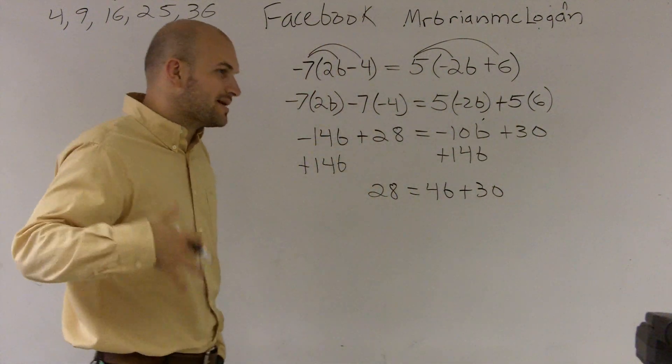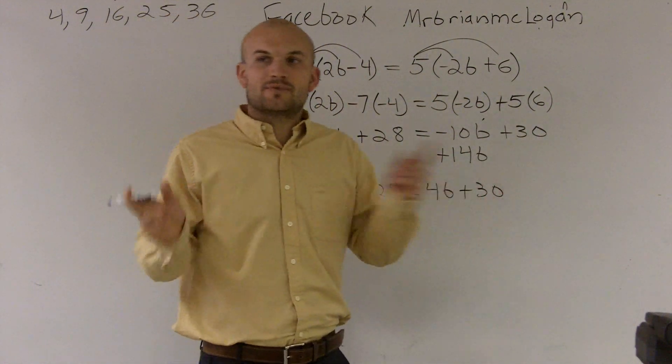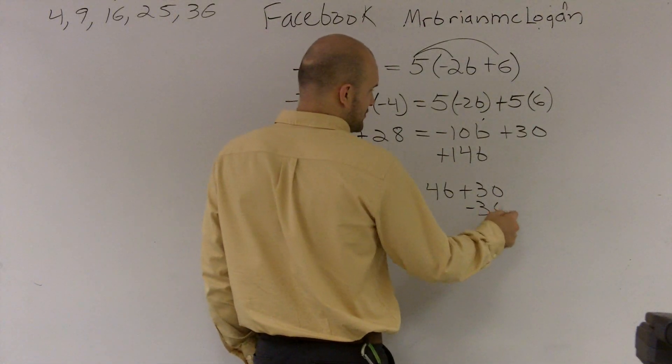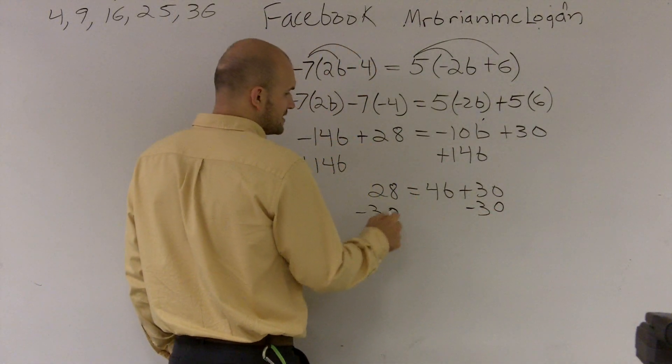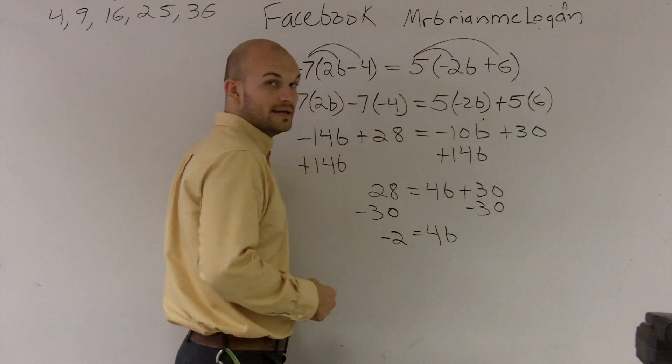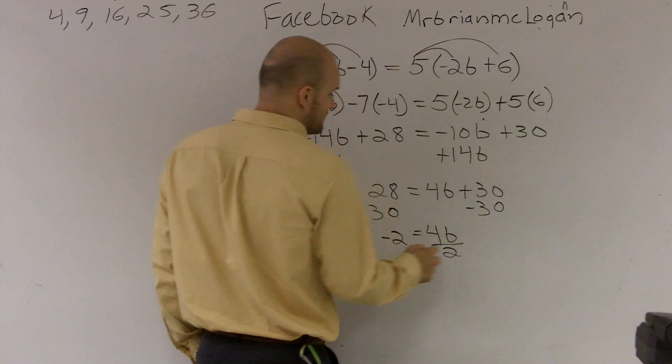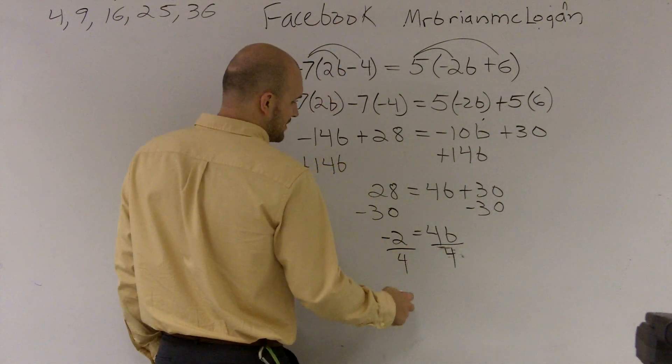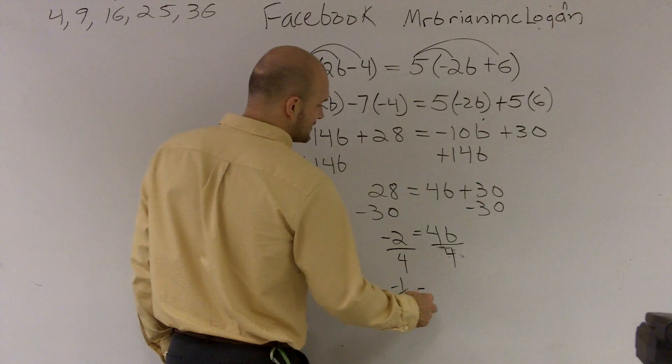My variable is positive and it's on the right side, which is fine, because at the end we can just switch it. The next thing we can do is I'm going to subtract the 30, undo my addition by subtraction. I get negative 2 equals 4b. And then I'll divide by 4.